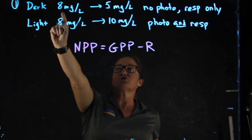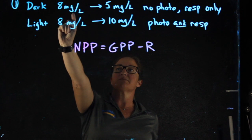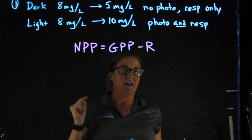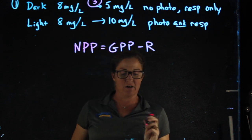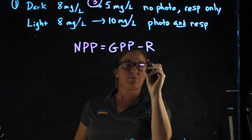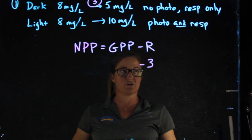In the dark, the concentration went from 8 milligrams per liter down to 5, meaning we used 3 milligrams per liter of oxygen. That 3 is the amount lost to respiration.